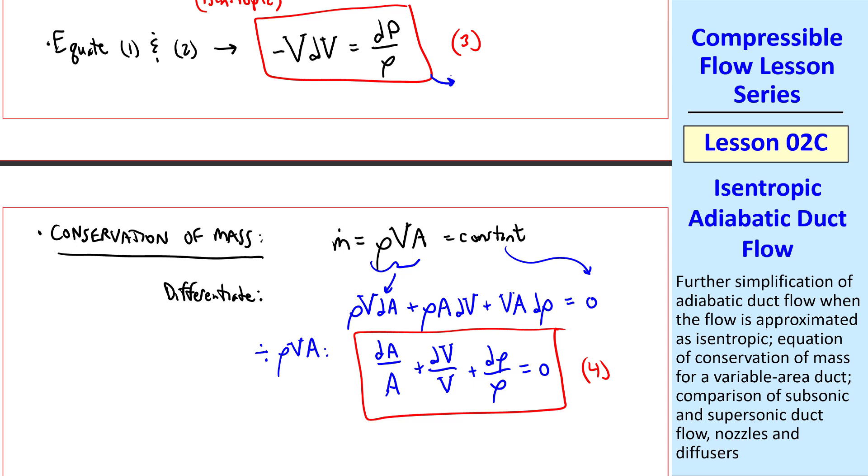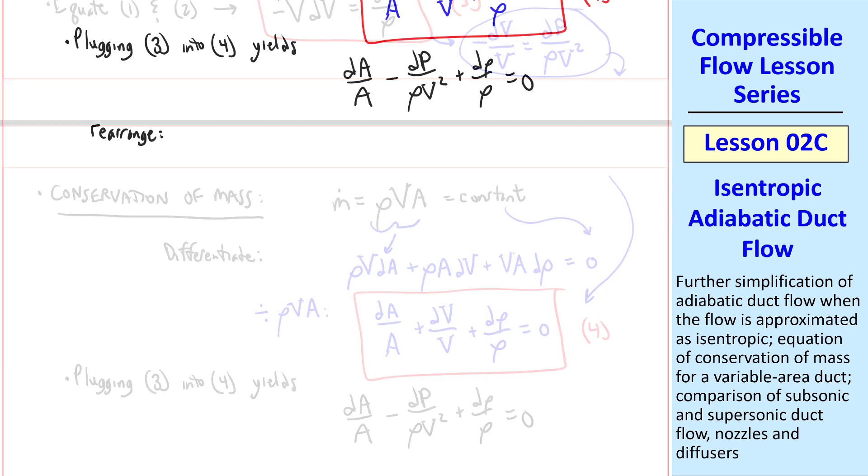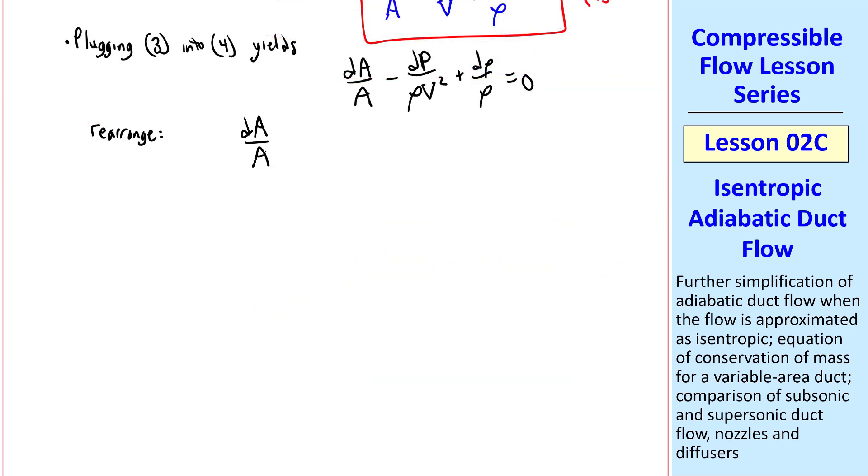Before I continue, let's divide equation 3 by V squared, giving us negative dV over V equal dP over rho V squared. Plugging this into equation 4, we get dA over A minus dP over rho V squared plus d rho over rho equals 0, which we can rearrange as dA over A equal dP over rho times 1 over V squared minus d rho dP, which I'll call equation 5.